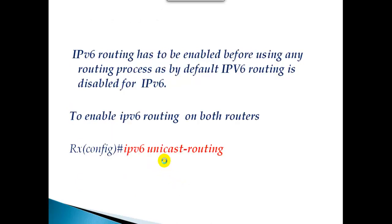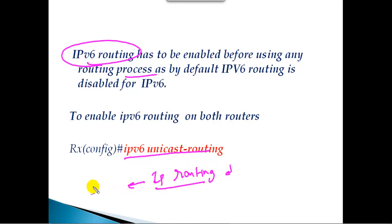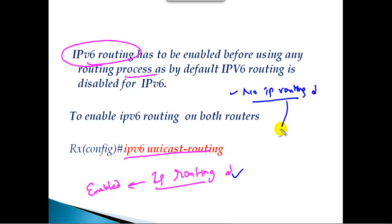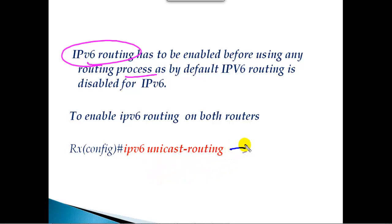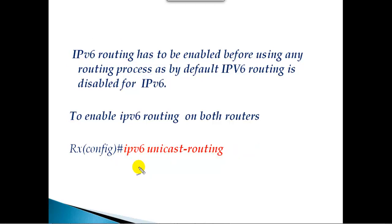We'll start with static routing first. One important thing to keep in mind: whenever we want to use IPv6 routing, it has to be enabled before using any routing process. We need to give the command 'ipv6 unicast-routing'. This command is equivalent to the 'ip routing' command in IPv4, which is enabled by default. However, in most Cisco IOS, IPv6 routing is disabled by default. You'll get a message saying 'IPv6 routing is not enabled' when you try to configure routing, so you must enable 'ipv6 unicast-routing' first.